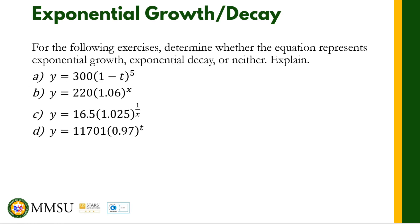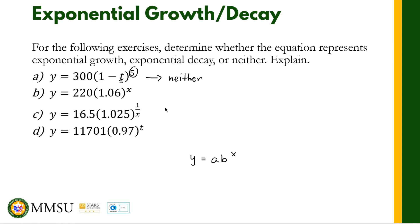For letter A, remember the definition of an exponential function: we should have y = a · b raised to x, where our independent variable is in the exponent. In this case, our independent variable t is in the base, and the exponent is a real number, not a variable. This means our answer is neither — this is actually a power function, not an exponential function.